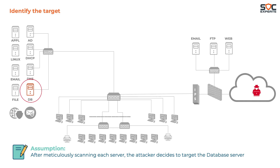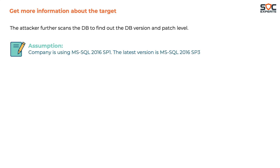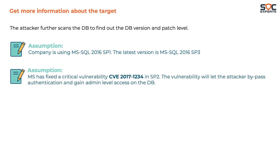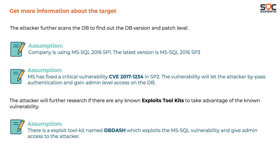Now that the attacker has a target, he looks for weaknesses. He scans the database to get the version and patch levels, learning the company is using MS SQL 2016 Service Pack 1, while the latest is Service Pack 3. Microsoft fixed a critical vulnerability — CVE-2017-1234 — in Service Pack 2, which allows bypassing authentication and gaining full access to the database. Because the company uses the older version it is vulnerable. An exploit named db- exists that leverages this vulnerability and gives the attacker full access.